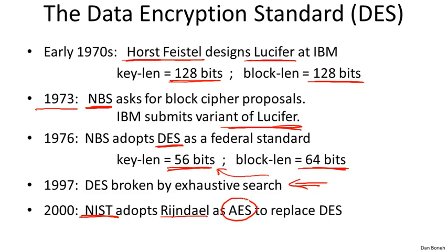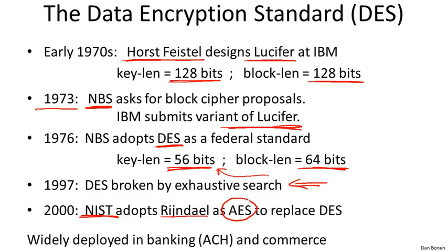DES is an amazingly successful cipher. It's been used in banking — there's a classic network called the electronic clearing house which banks use to clear checks, and DES is used for integrity in those transactions. It was also very popular in commerce as the main encryption mechanism for the web, until it was replaced by AES. Overall it's a very successful cipher in terms of deployment, though it also has a rich history of attacks, which we'll discuss in the next segment.